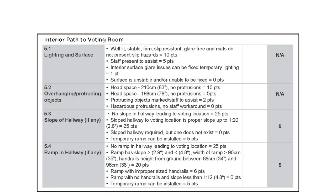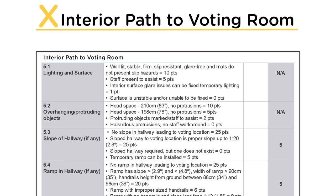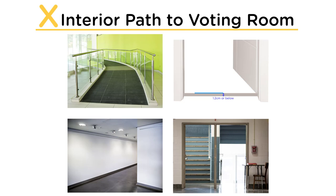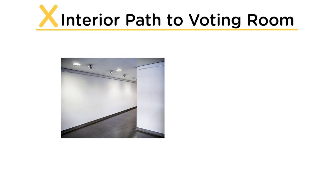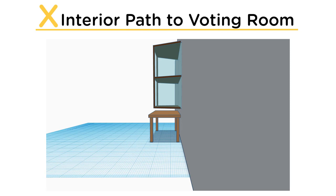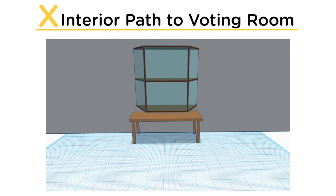Interior Path to Voting Room. Measure any slopes, ramps, thresholds, corridors, and doorways along the path to the voting room, ensuring the route is accessible and free of obstructions. When evaluating the interior path, remember that highly polished surfaces can be slippery, and wet and loose mats can be tripping hazards. Score the floor surface based on the section of the route with the worst condition. Overhanging or protruding objects in school hallways — such as a cupboard or trophy case — can be remediated by placing a table underneath, so a person with a visual impairment can tap the table with their walking stick to identify the obstacle.